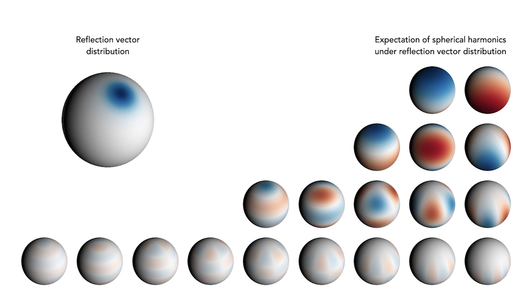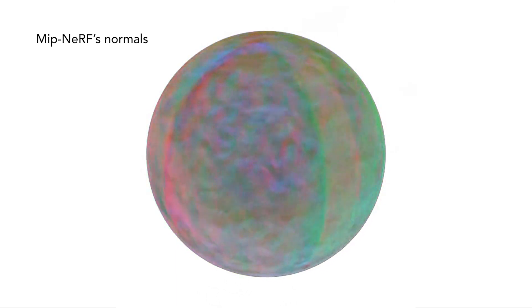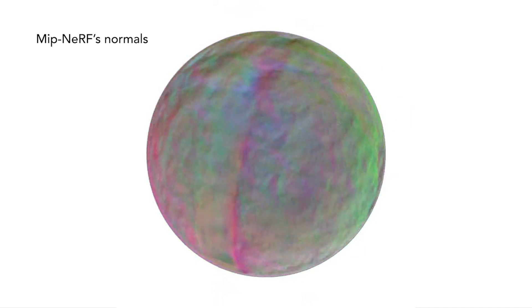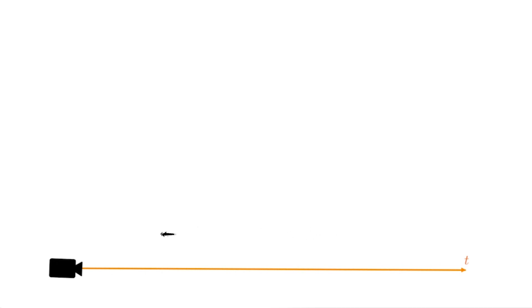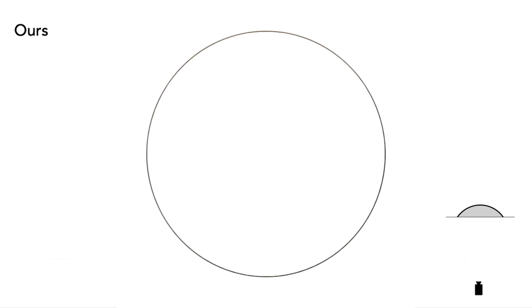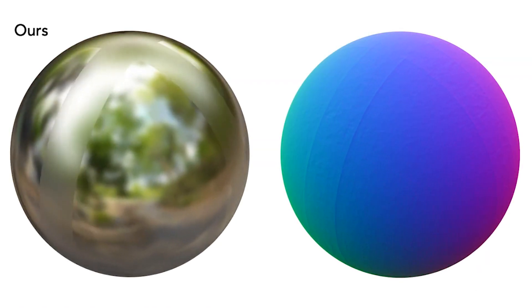Our proposed reflection direction re-parameterization relies on having accurate normal vectors. But as we saw before, NeRF's geometry is extremely foggy, and the normal vectors computed from its volume density are therefore unusable. Looking at a single ray passing through the object, the density repeatedly goes up and down, and as a result the normal vectors point in alternating directions. We apply a novel regularizer that discourages this and produces significantly more accurate normals. It also reduces fogginess by producing weights that are more concentrated around the surface, resulting in significantly better normals and renderings.